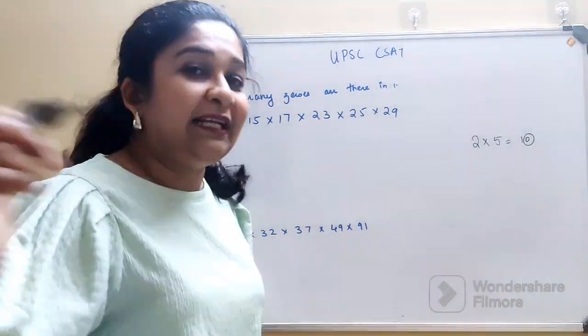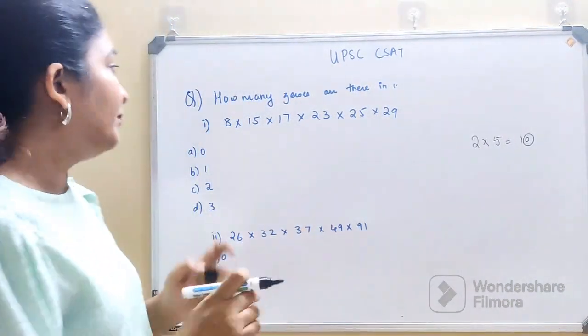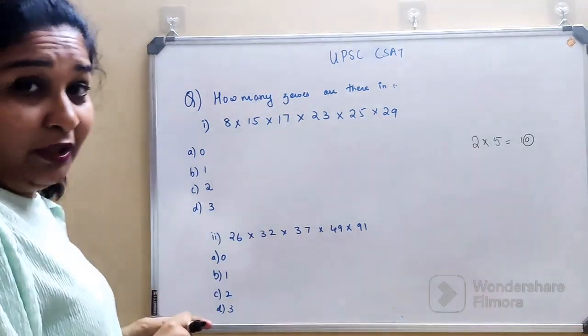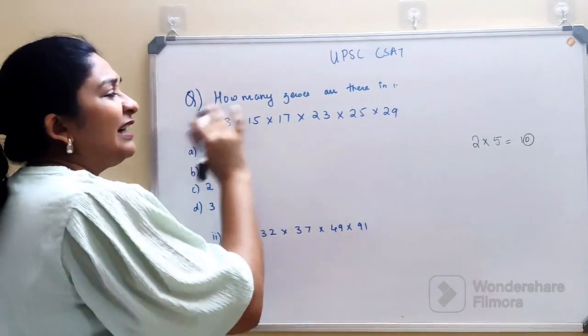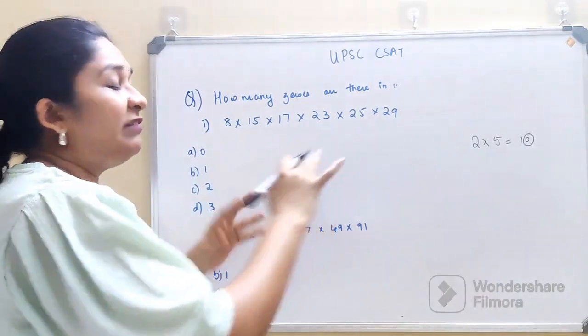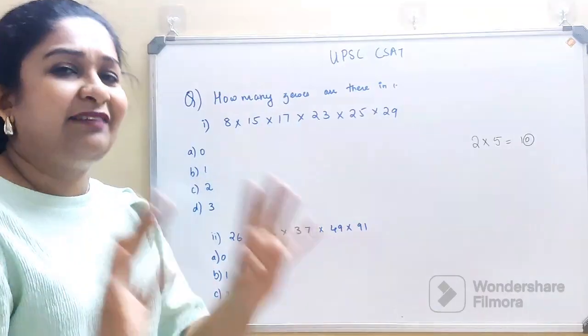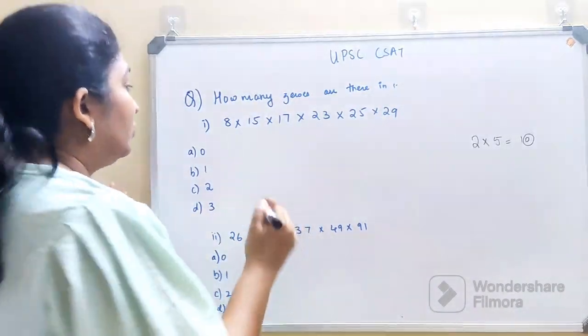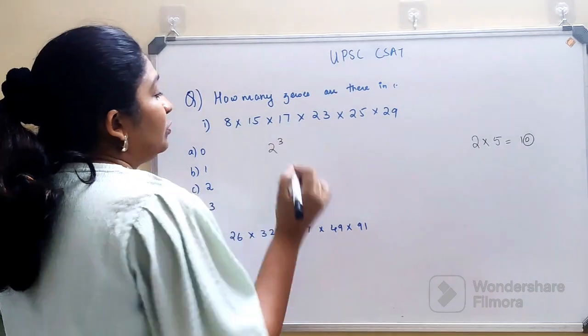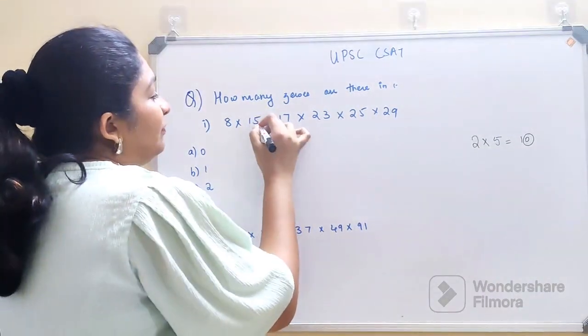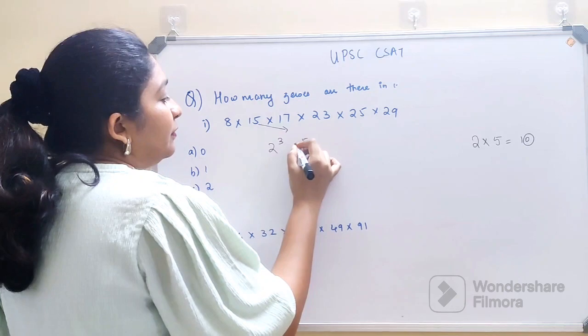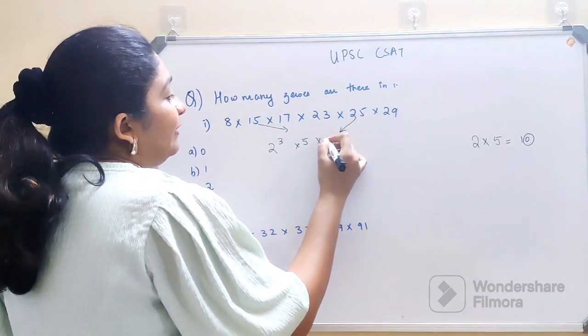For the first example, we have 8. We'll write only when there's a 5 or 2 involved—others we won't write. So 8 is 2³, and then here if you see there is a 5, and here there is a 5 again.